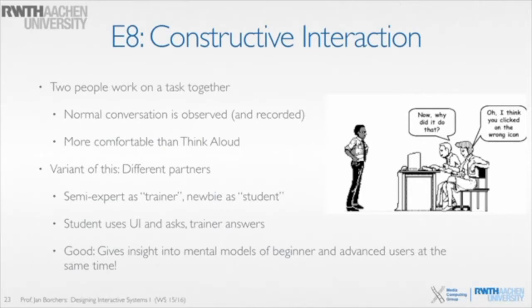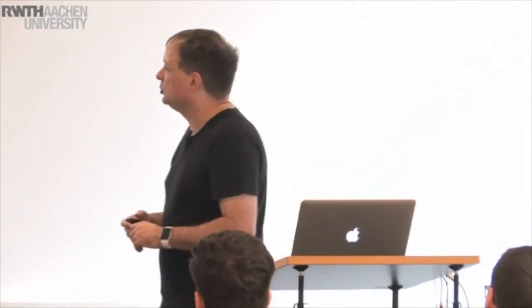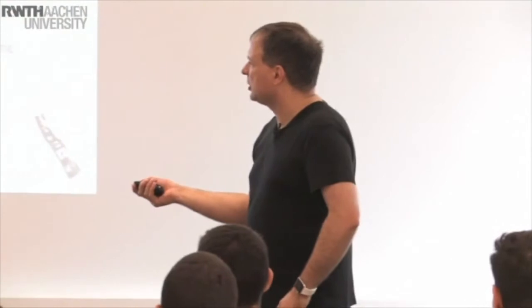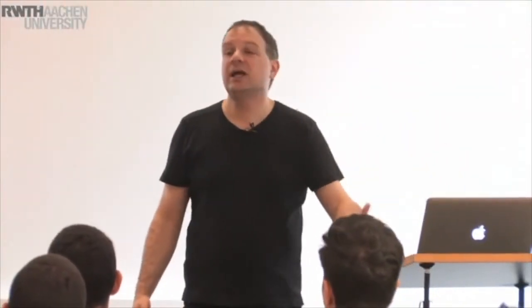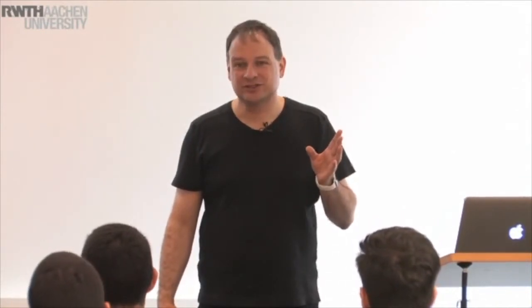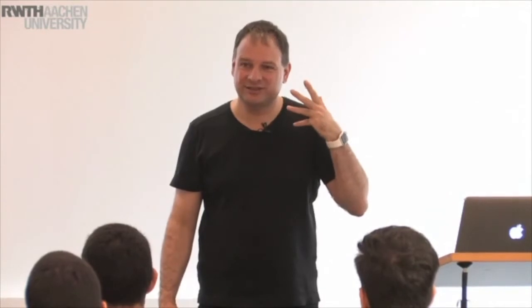Capture and record this whenever possible. A variant is to use two partners of different skill levels — one semi-expert as a trainer and the newbie as a student. The student uses the interface and asks the trainer about problems, and the semi-expert helps the newcomer. This is wonderful because it gives insight into the mental model of both a total beginner who's never seen the system and someone who's already used it.